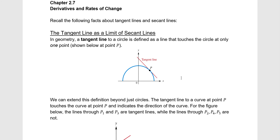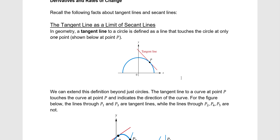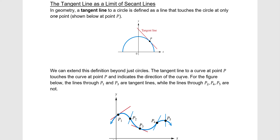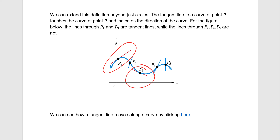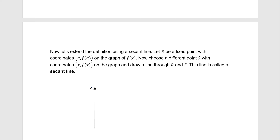Chapter 2.7 covers derivatives and rates of change. This first page is a review of tangent lines and secant lines. Remember that a tangent line touches the curve at only one point and has the same direction as the curve at that point. In the graph, the red lines at P1 and P3 are tangent lines, while P2, P4, and P5 are not.